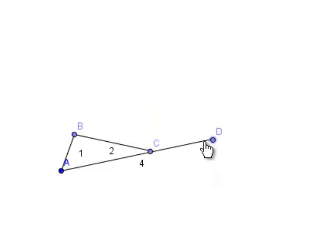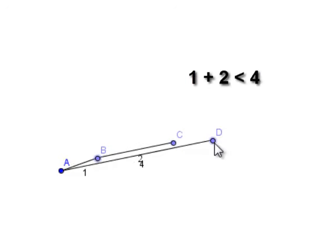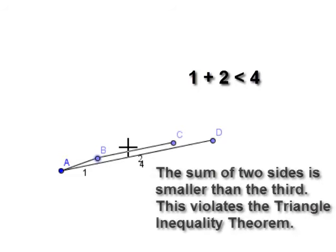Doesn't look like it. No matter how I move these, there's no way that I can get C to connect with D. And that makes sense because the sum of 1 and 2 is 3, which is not greater than the third side of the triangle, which is 4.